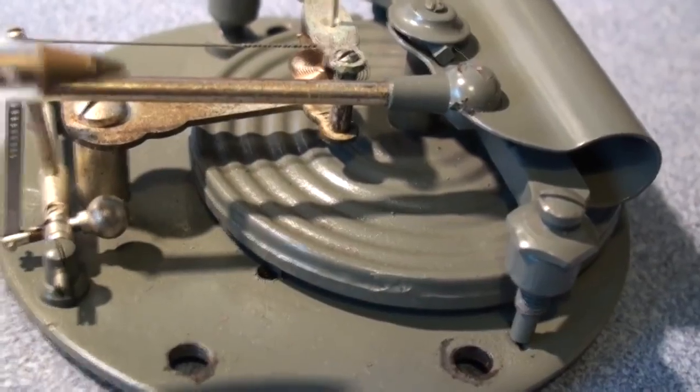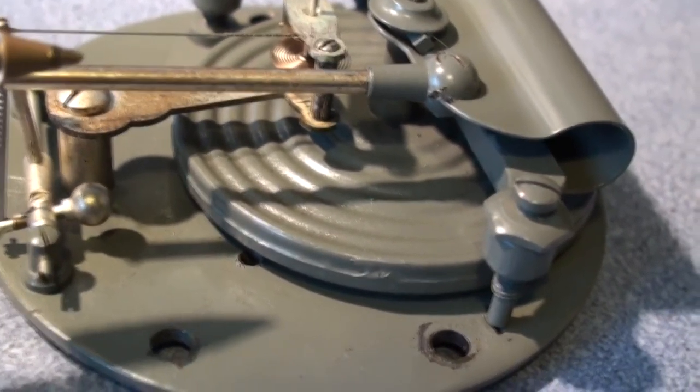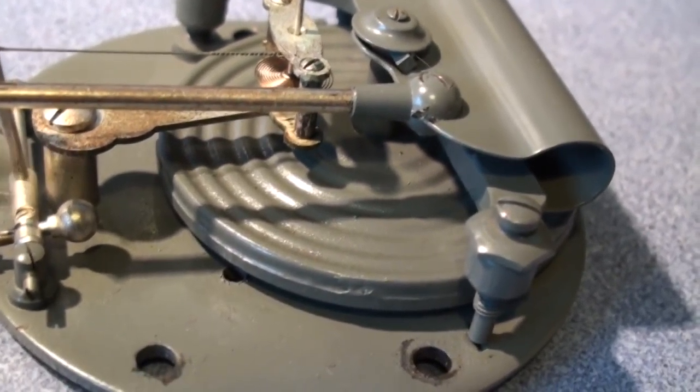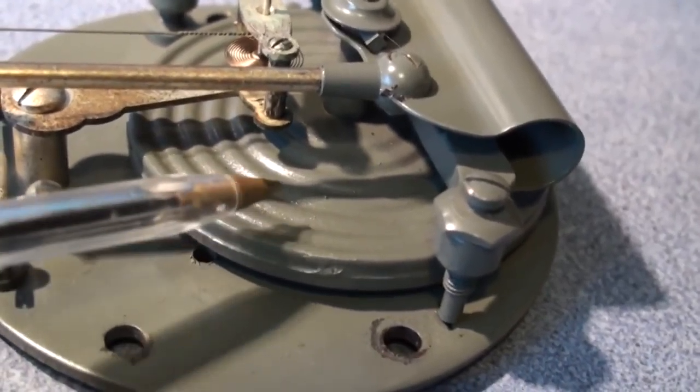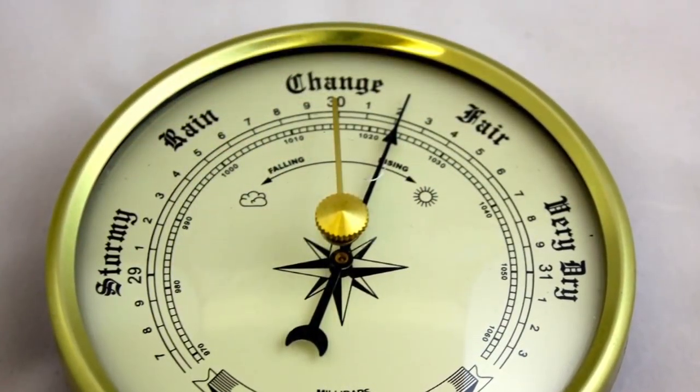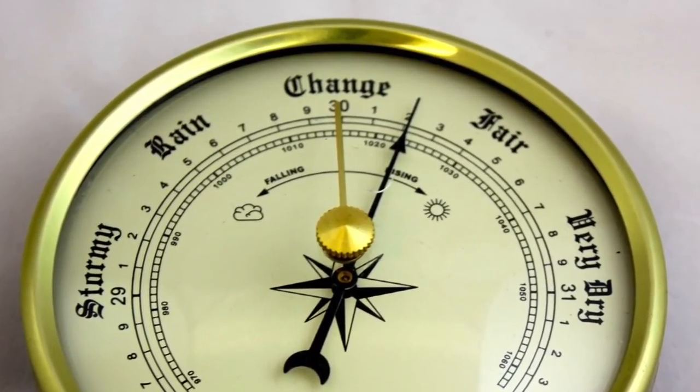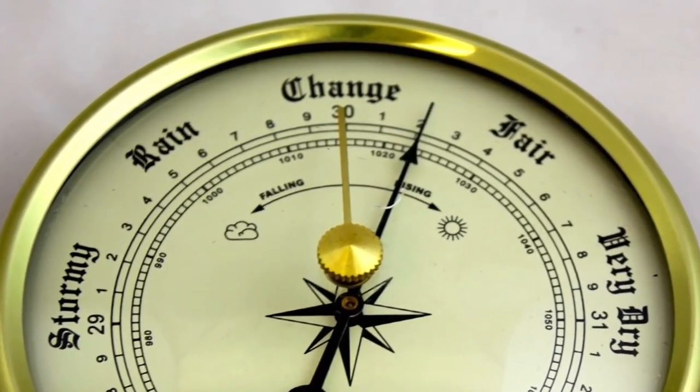As the air pressure rises or falls, the box either pushes inward or flexes out. A spring is attached to the box and as the box moves in and out, the spring moves the pointer on the dial. The dial is marked with numbers so you can read the air pressure right away.